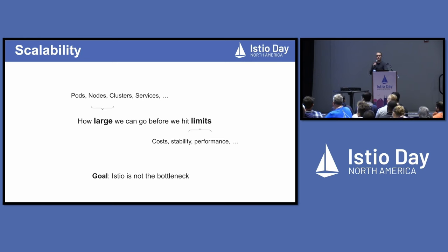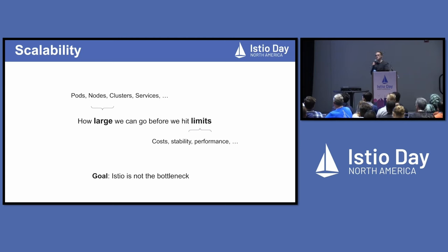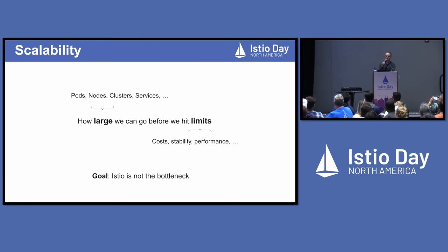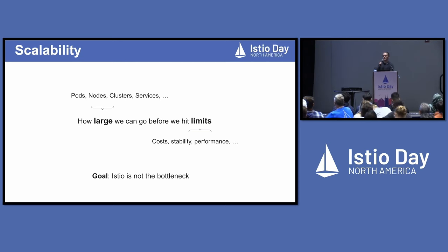In general, the goal I have with Istio is that Istio is not the bottleneck. We don't need to scale to a billion pods if no one's running a billion pod cluster. But if someone wants to run, say, a 100,000 pod cluster, we don't want to be the thing that's blocking them from doing that. How many people here are running clusters with over 1,000 pods? Quite a few people. What about over 10,000 pods? That's more than I expected — about five hands. We are probably currently not 100% meeting this goal, so that's why we're talking about improvements we're making so that we can achieve that goal in the future.